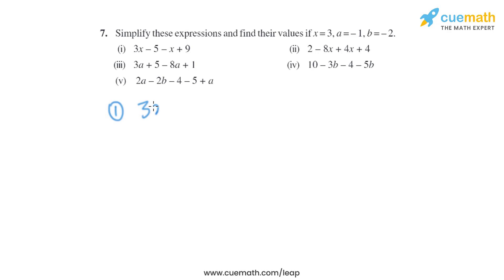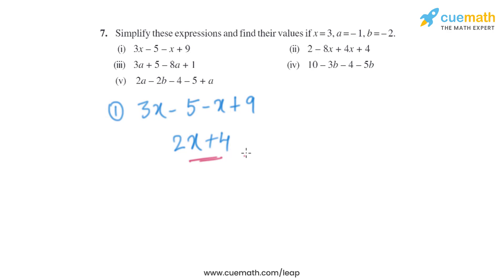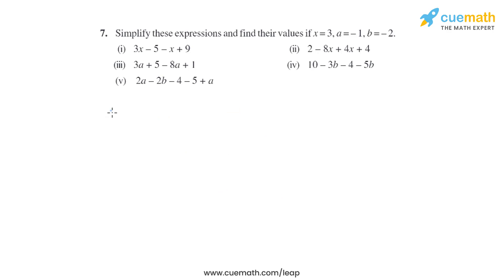The first expression is 3x minus 5 minus x plus 9. The like terms are 3x and minus x, which gives us 2x, and minus 5 plus 9 gives us plus 4. So the simplified form is 2x plus 4. Putting x equals 3, it becomes 2 into 3 plus 4, which is 6 plus 4, which equals 10.